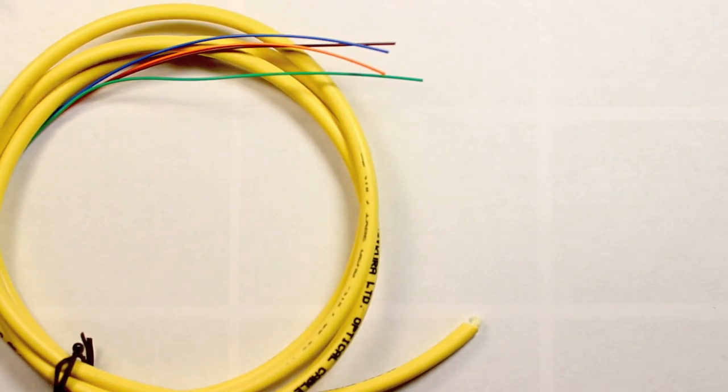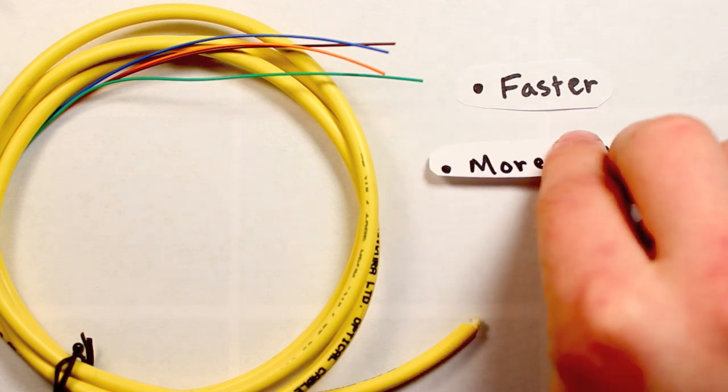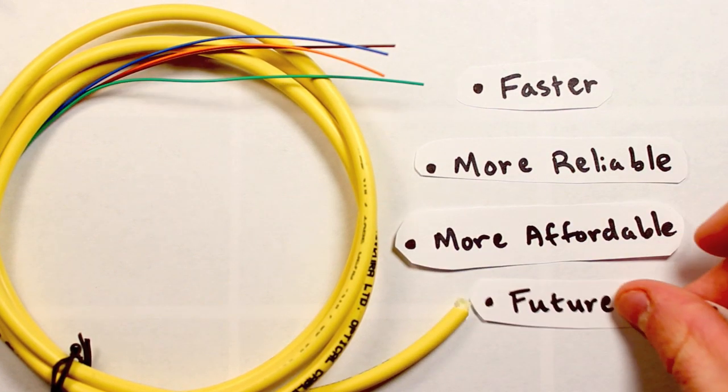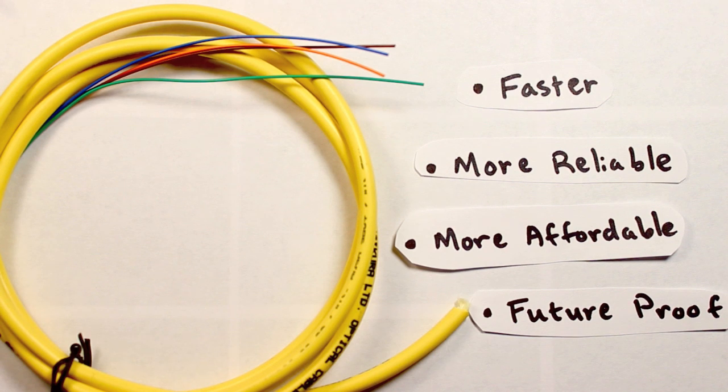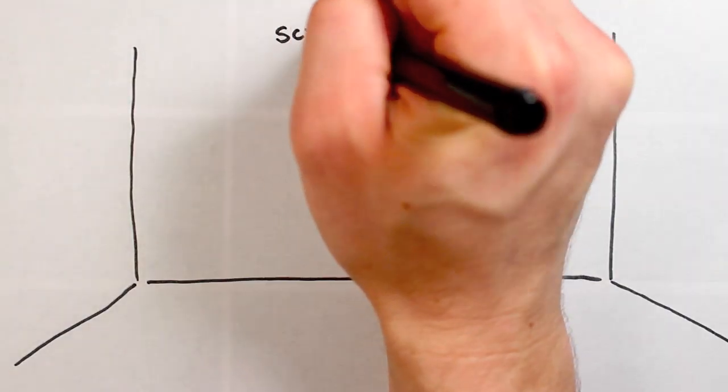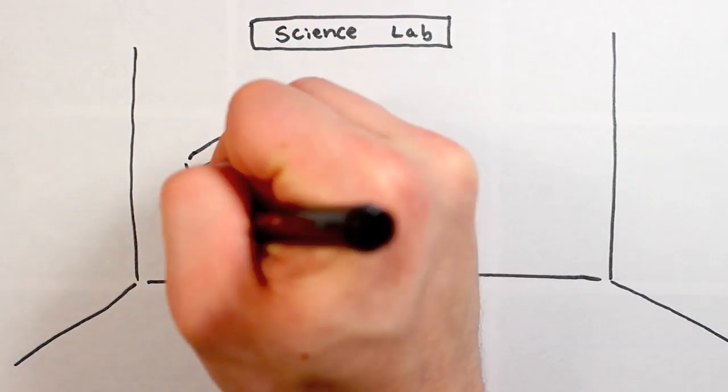This is where fiber-optic cables come in. Fiber-optic cables are the faster, more reliable, and now more affordable competition to traditional copper networks. To move data, fiber-optic cables transmit information over wavelengths of light, meaning that they can move the data faster. Like, way faster.